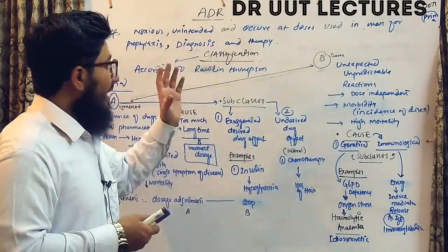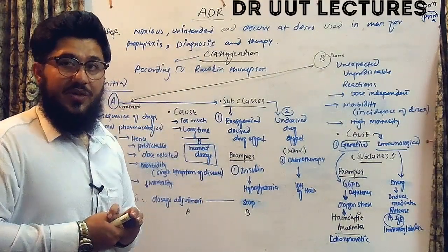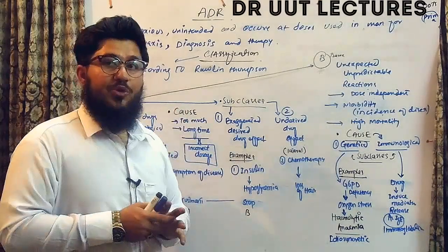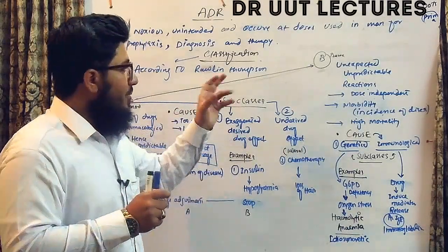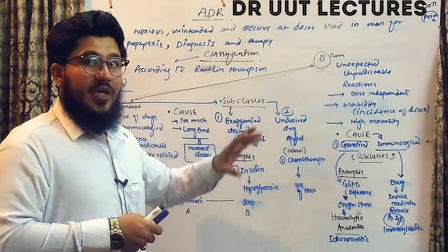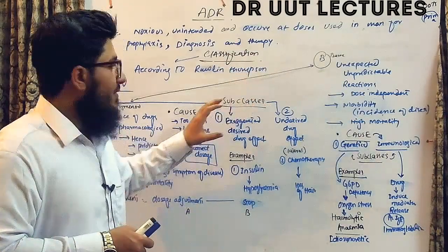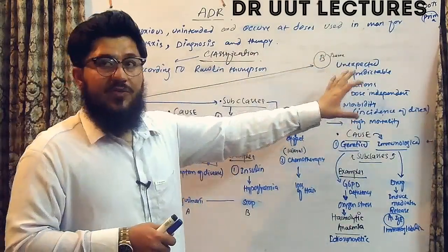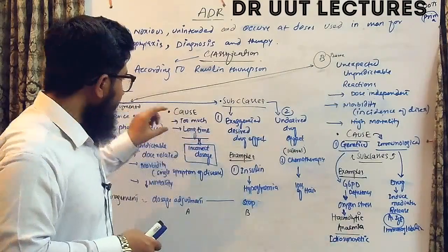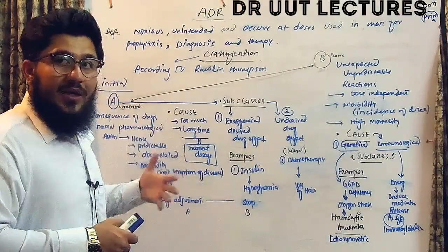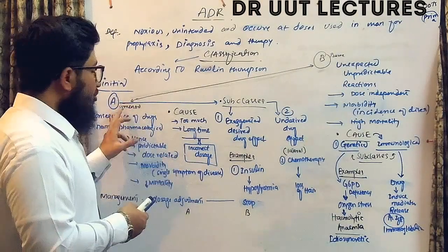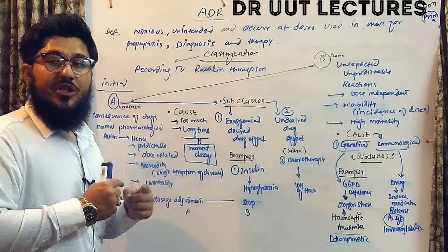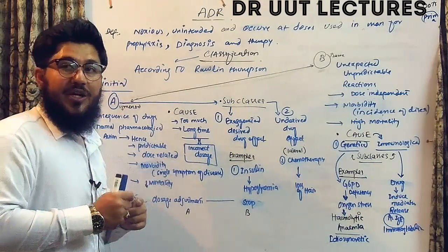Now let's look at the classification of adverse drug reactions. The classification we are going to discuss is the Rawlins-Thompson classification. According to this classification we have two types: type A and type B reactions. Type A is also known as the augmented type of reaction.